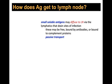How does antigen get to the lymph node? We differentiate by size. Anything smaller than a bacterium can passively diffuse to the lymph node — it's taken up into lymphatic capillaries draining to the lymph node. This passive transport applies to free antigen, antigen bound by antibodies, or antigen with complement proteins attached. Anything smaller than a bacterium can passively diffuse to the lymph node.